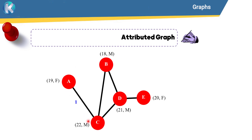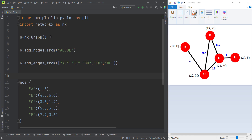These two people are wife and husband, so the relationship weight is 1. Similarly, these two people are husband and wife, so the relationship is also 1. These three males are classmates. The relationship between two of them is 0.8 because they are almost the same age and both are married. The relationship between two others is 0.6, and the relationship between B and C is 0.5.